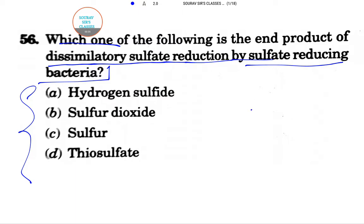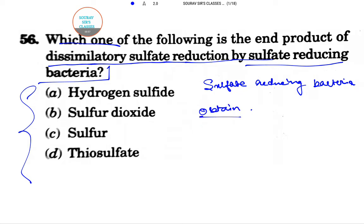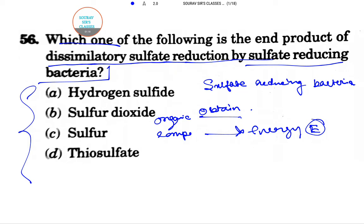So what are sulfate-reducing bacteria? These bacteria can obtain their energy — represented by E — from the oxidation of organic compounds. On oxidation of organic compounds, energy is produced.